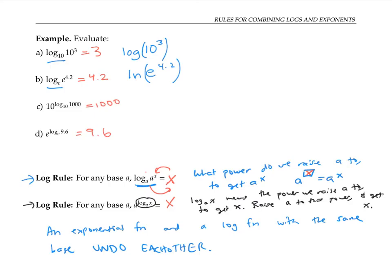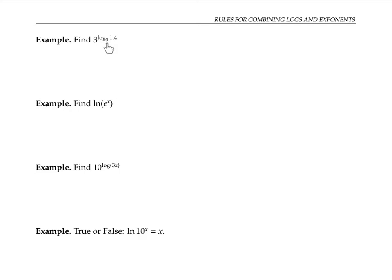Now let's use these two rules in some examples. If we want to find 3 to the log base 3 of 1.4, three to the power and log base 3 undo each other, so we're left with 1.4.